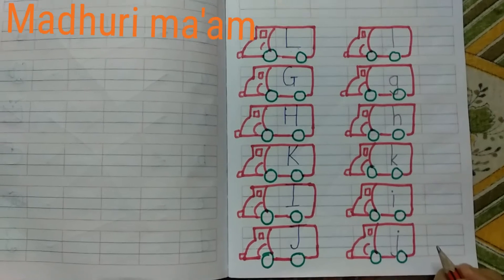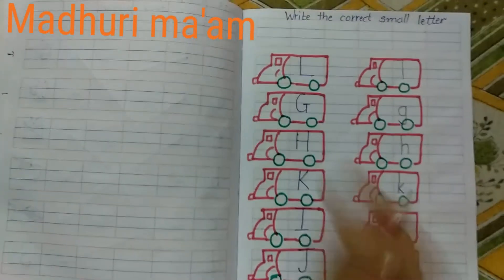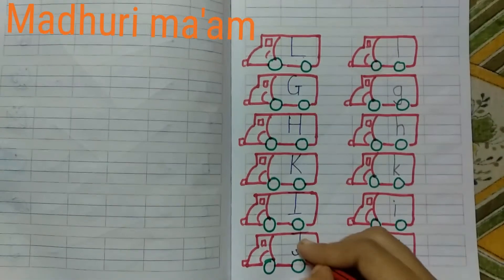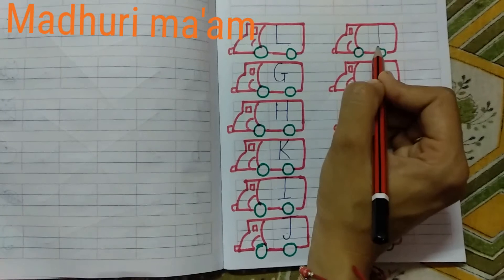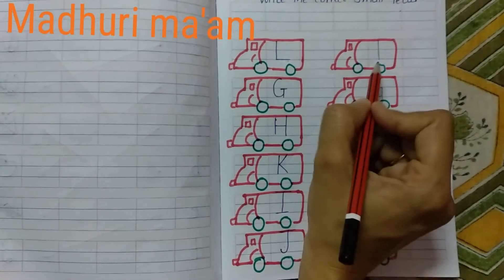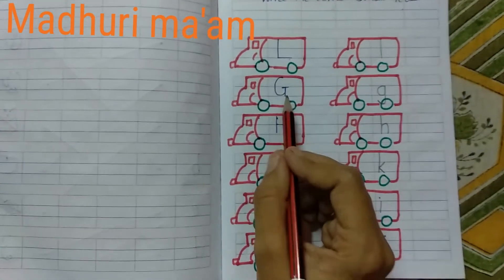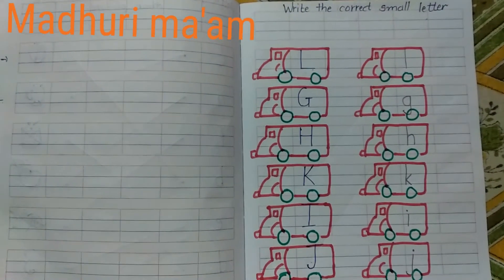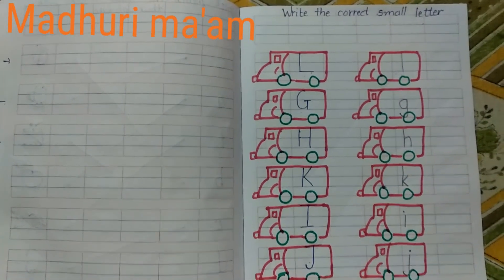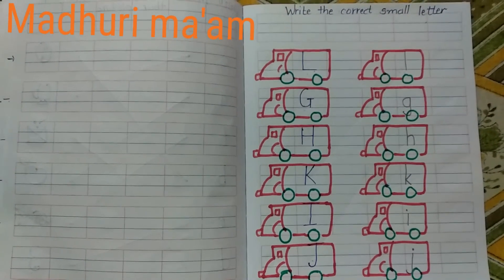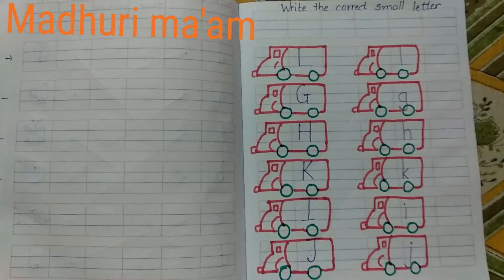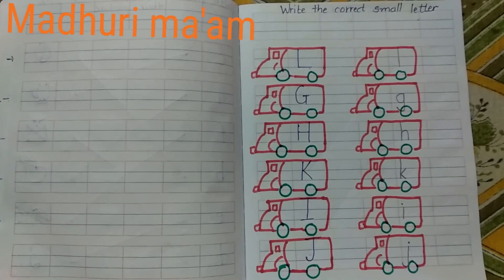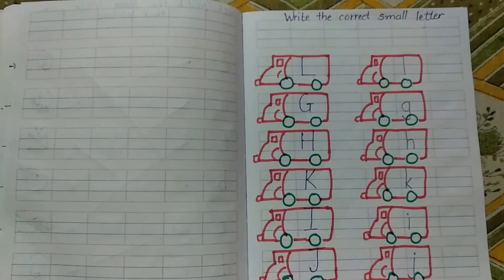Okay, you have to write like this — in the first row are capital letters, and you have to write the related small letters. Capital L, small l; capital G, small g — you have to write like this. Do this activity at home in your notebook. Read first and write later. Okay, bye bye, thank you, bye.